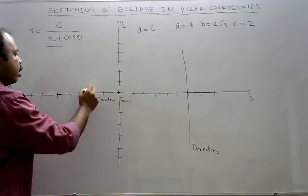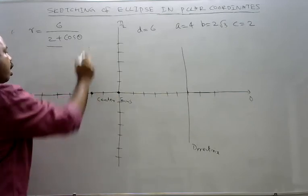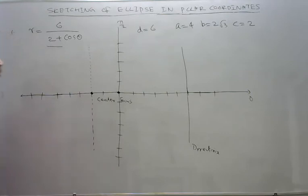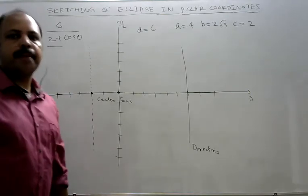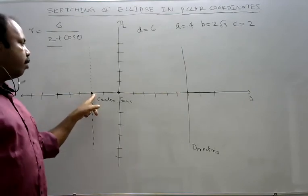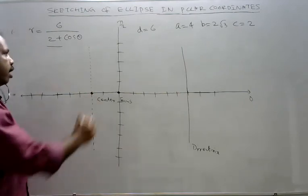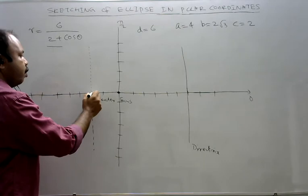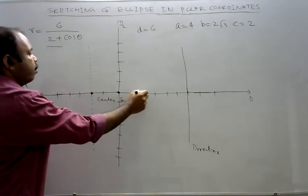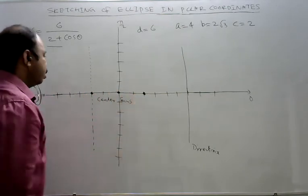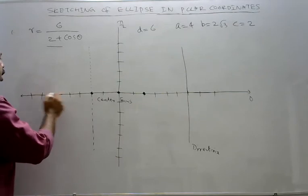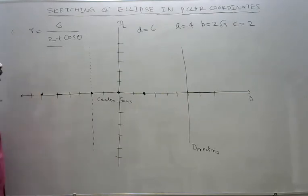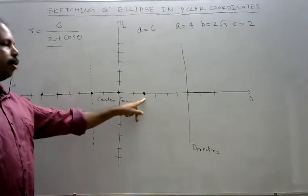Now we draw vertices of minor axis. We have A. A means distance of vertex from center. That is 4: 1, 2, 3, 4. Then 1, 2, 3, 4. So A, we take 4 units on each side of center.